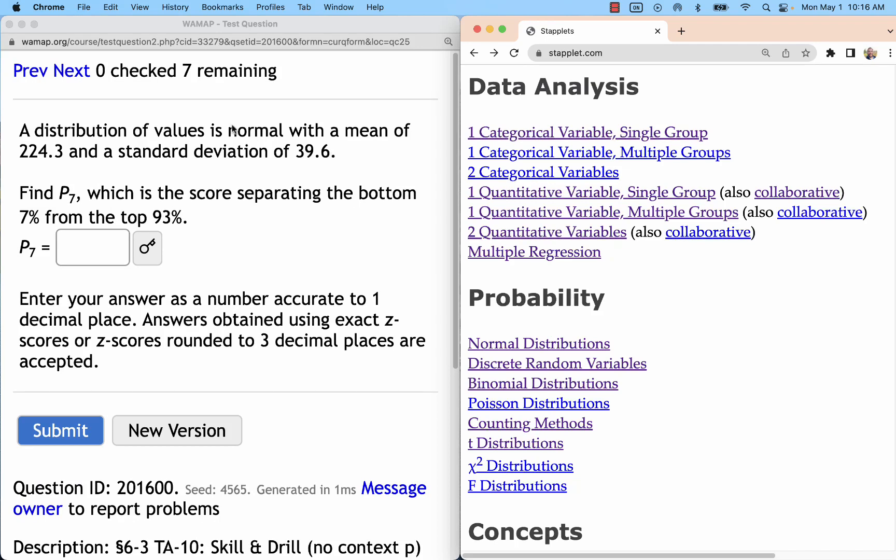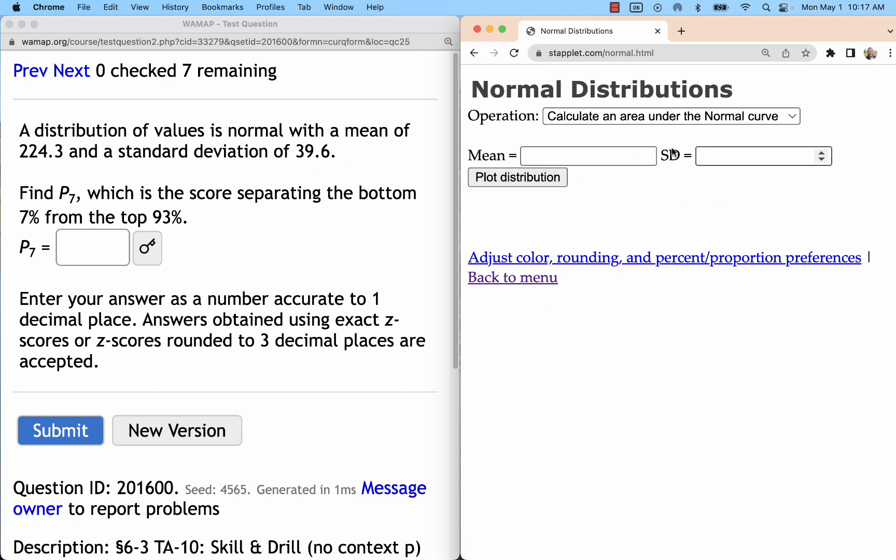This is a problem with a given normal distribution mean and standard deviation. This time we're trying to find a score that separates a shaded region and an unshaded region. It's not abundantly clear which region would be shaded and which won't, and it actually doesn't matter too much because we just want to know what the boundary is since we're using a probability and finding a value.